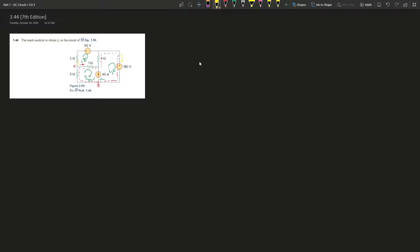Alright, so question 3.44 here. It says use mesh analysis to attain I0 in the circuited figure. And remember, this is the 7th edition, so if you're doing the 6th, then don't watch this one.